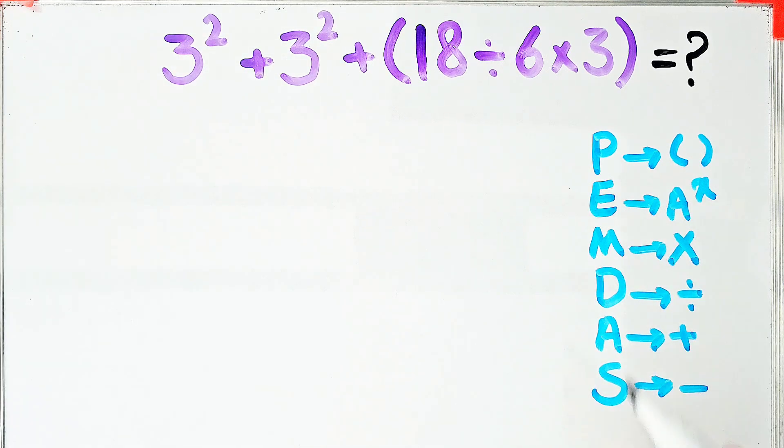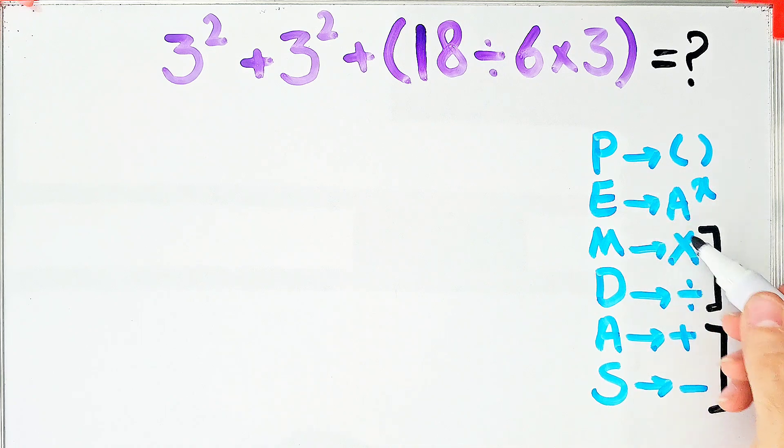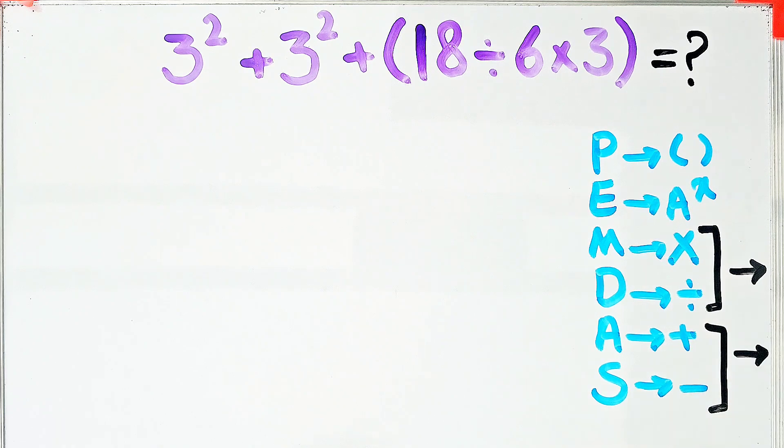Don't forget, multiplication and division have the same level of priority. When we have both in an expression, we start from the left and simplify the question.